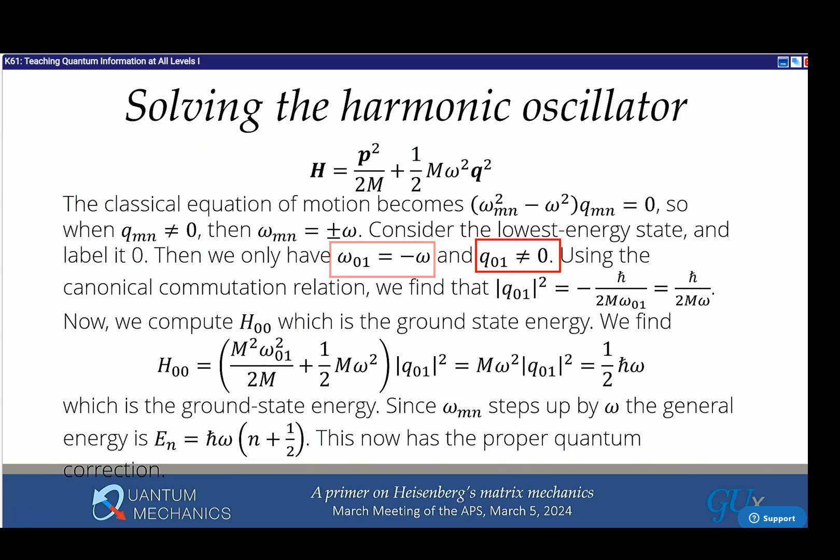For the ground state there's only one nonzero element because I can't lower the ground state. Using the formula from the previous page, q_01 squared equals h-bar over 2mω. Plugging that in to calculate H_00 as p^2/2m plus (1/2)mω^2q^2, when the dust settles it equals (1/2)h-bar*ω. We just found the ground state energy of the harmonic oscillator, but we also learned the energy differences are h-bar*ω. We've found all the energy levels of hydrogen.